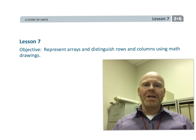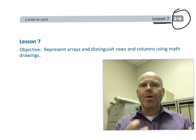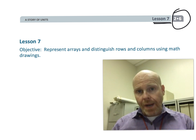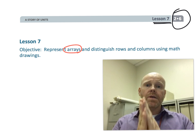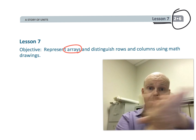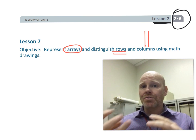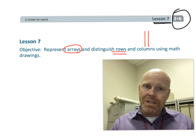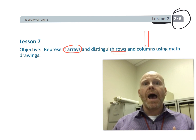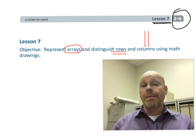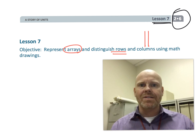This is second grade module 6 lesson 7. In this lesson students are going to continue practicing using arrays. They're going to be practicing using the important vocabulary words of rows and columns, and we're going to be connecting the math drawings. We're going to continue talking about repeated addition — this is one more lesson where students learn important vocabulary words and math concepts, but they're doing it in context. So let's get started.